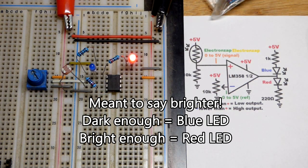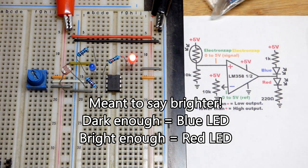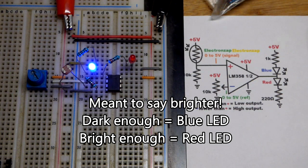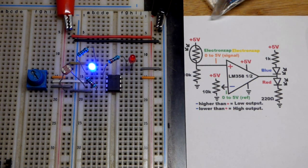So there we go. We got darker. Now it's red or brighter. And if I get even brighter, of course, it stays red. So we can adjust the sensitivity of when the output is going to go high or low based on light level.